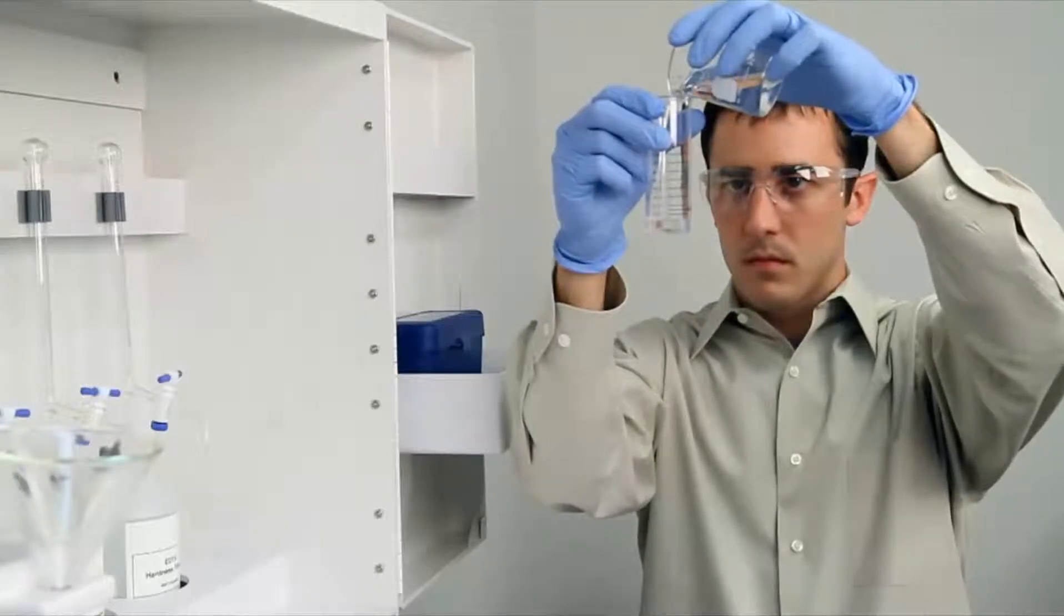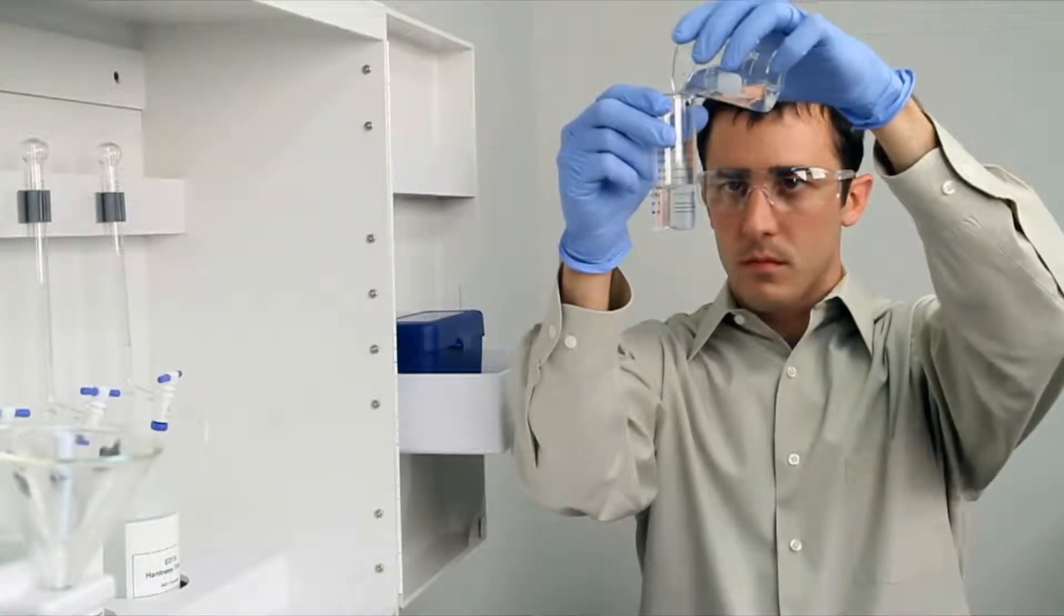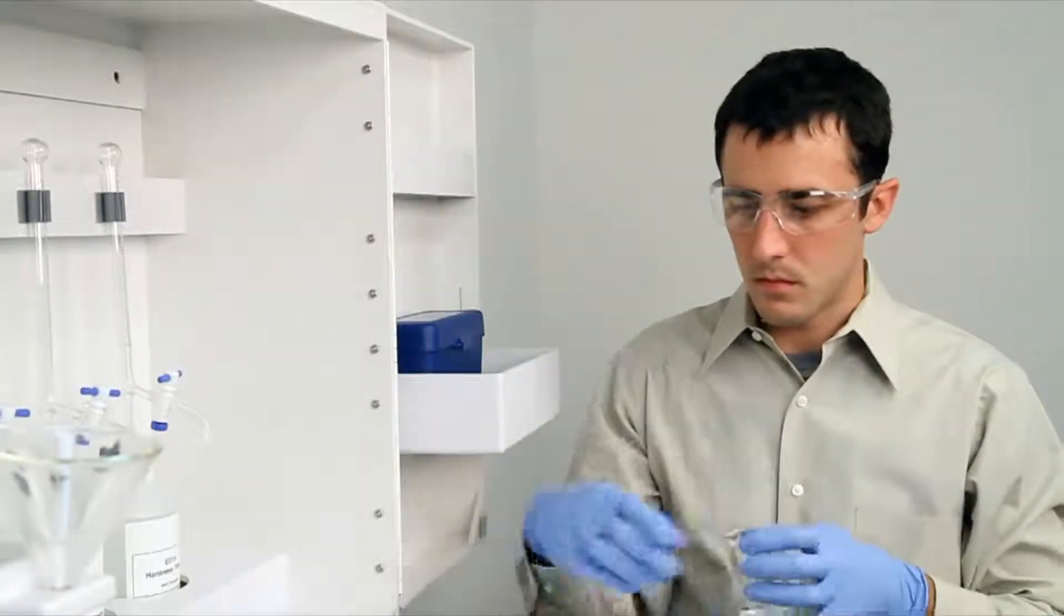To get an accurate sample size, you want to hold the vial close to eye level. Once you feel you have an accurate sample, place the vial on a level surface and bend down to eye level.